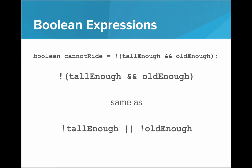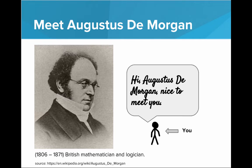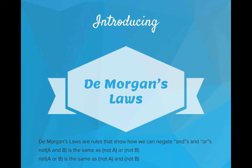You've just made this earth-shattering realization, and you're wondering who you can tell this to — who else would understand? Well, meet Augustus DeMorgan. He is very excited to meet you, because what you just realized is what he realized back in the 1800s, and those are DeMorgan's Laws.